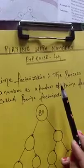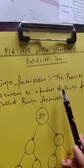Hello students, this is your Mathematics class, Standard 6. Today I am going to start Exercise 4.4. First of all, we need to know what prime factorization is. Prime factorization means the process of expressing a number as a product of prime factors. It means prime factorization is finding which prime numbers are multiplied together to make the original number.